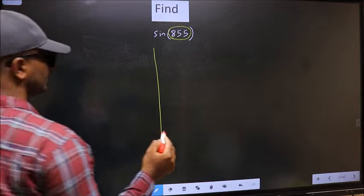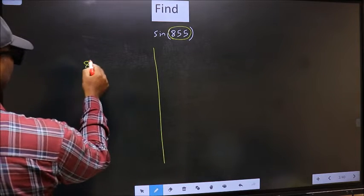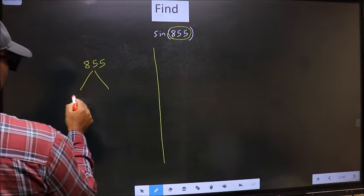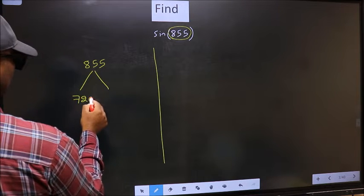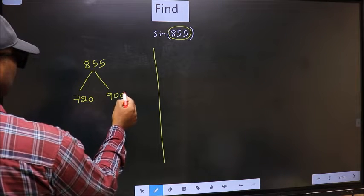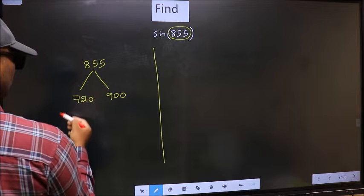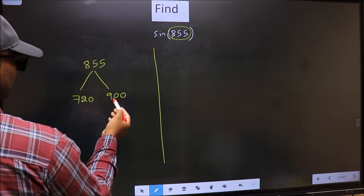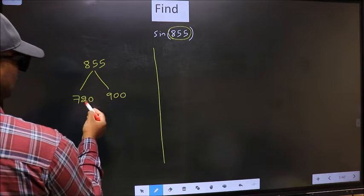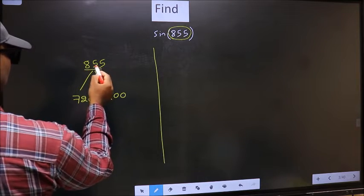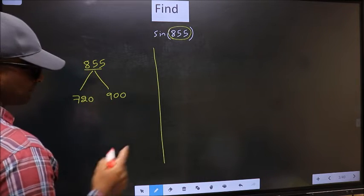What I mean is, 855 lies between 720 and 900. This is 180 times 4, and this is 180 times 5. Between these two numbers, 855 lies.